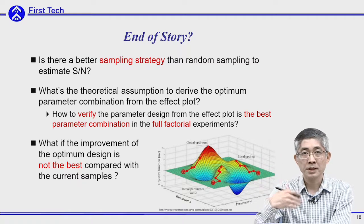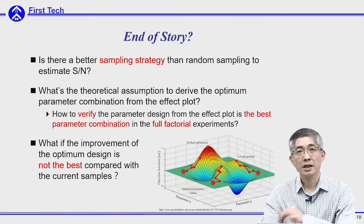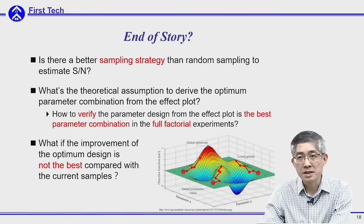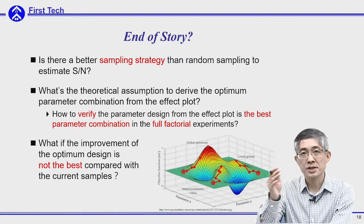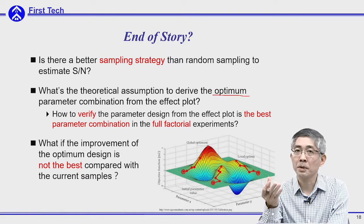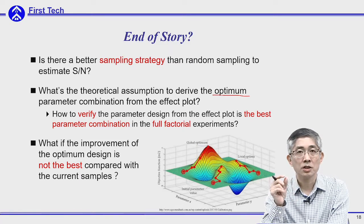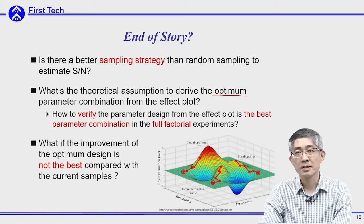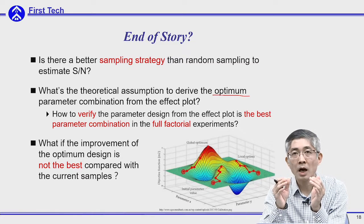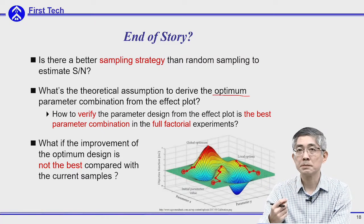Second, we are using parameter design — using analysis of means to get the effect plot — and using the effect plot we assume all the factors are independent and select the best level for each factor to maximize the SN ratio. However, what is the theoretical assumption for this kind of application? How can we use this effect plot to derive the optimum parameter combination? And also, after you obtain the optimum parameters, how do you verify your result — not just by experiment, but how do you verify that your parameter is the best in the full factorial?